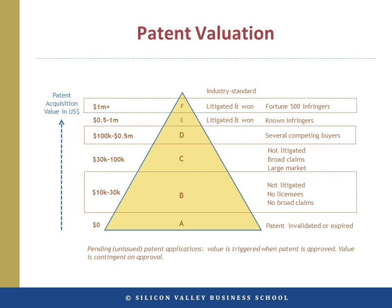Group D is patents with a value of $100,000 to $500,000 each. Where multiple competing buyers bid to acquire a patent with strong claims and applications in a large growing market, the price can rise to several hundred thousand dollars per US patent.